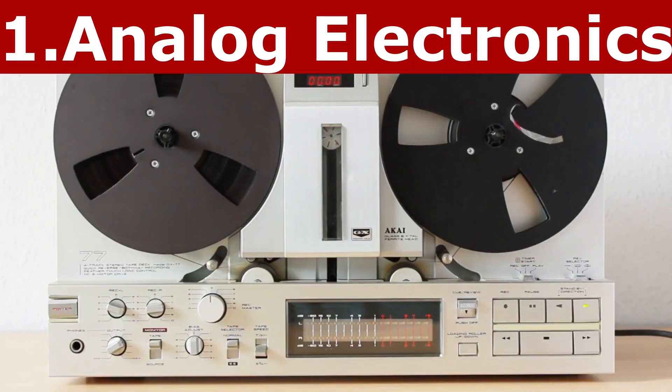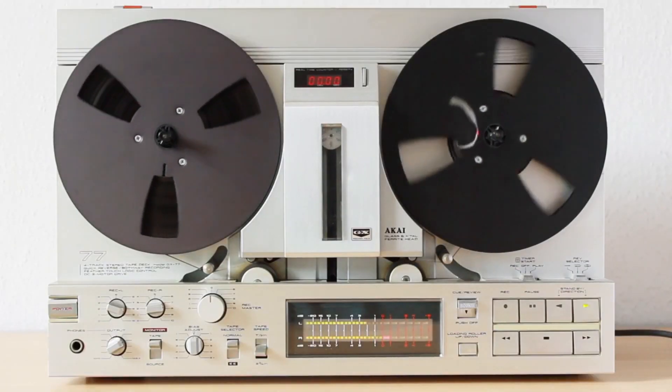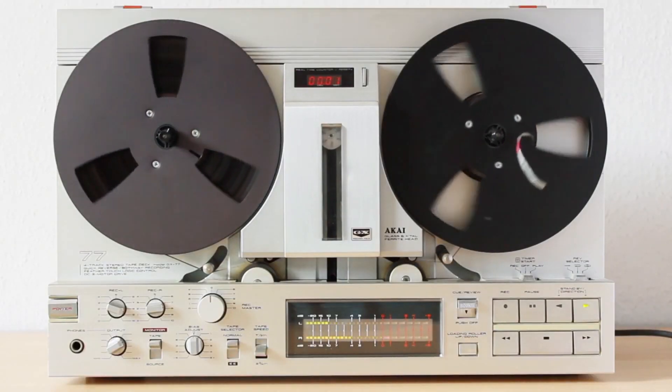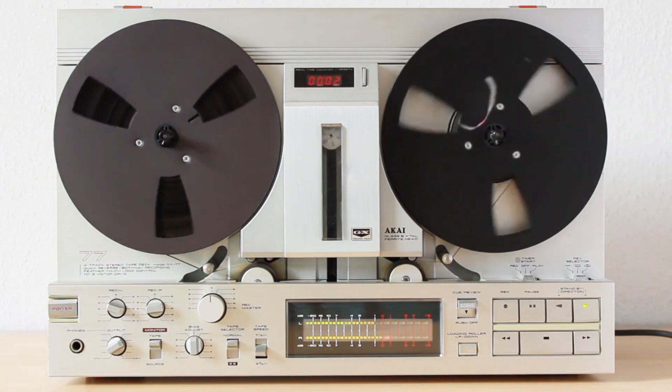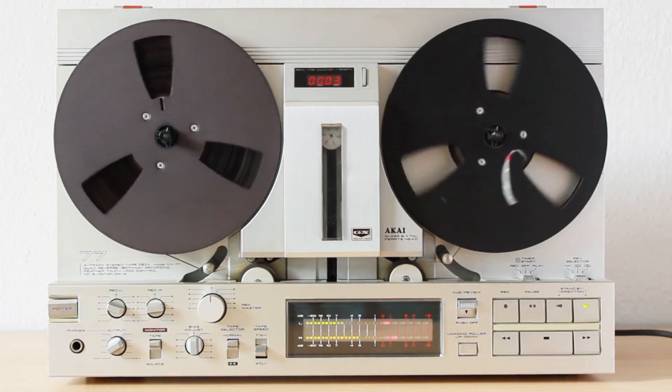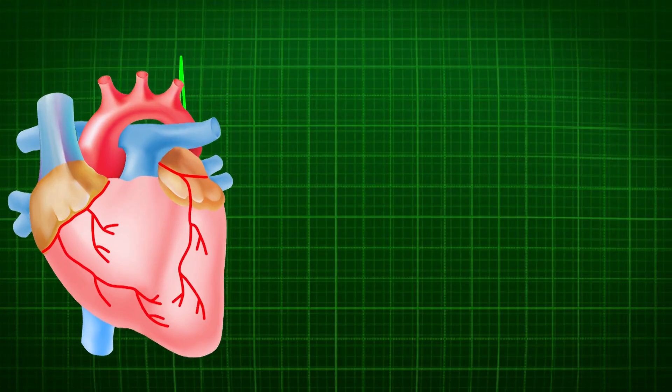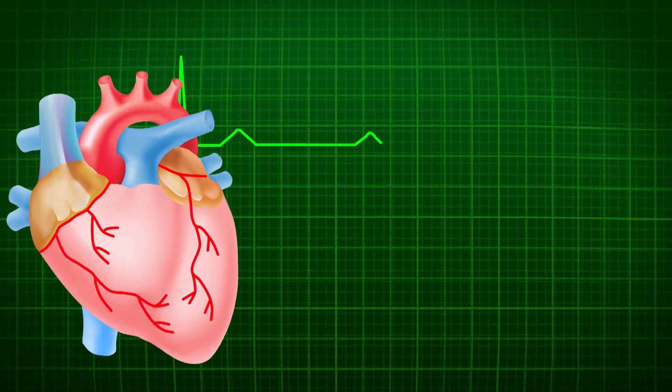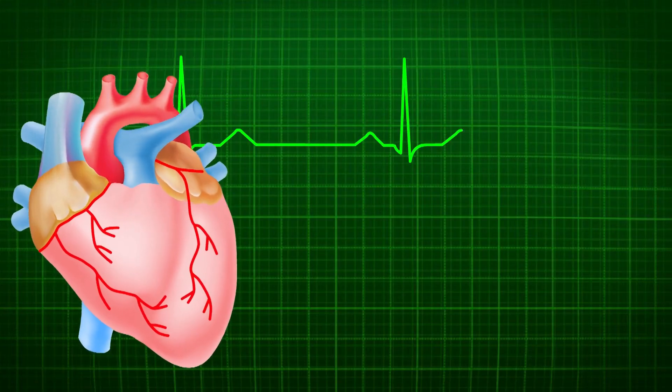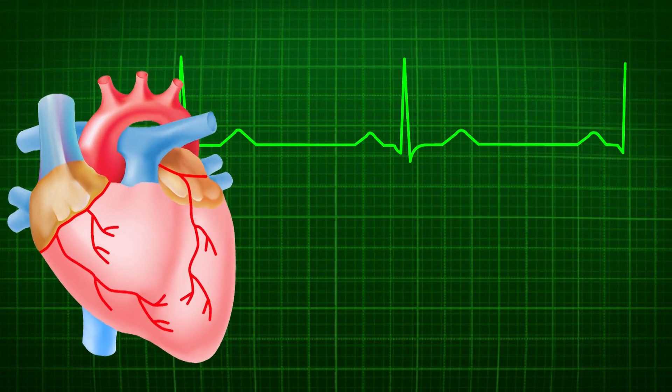Number 1: Analog Electronics. Analog electronics deals with analog signals. Analog signals are continuously variable signals. This is in contrast to digital signals that generally take only two levels.